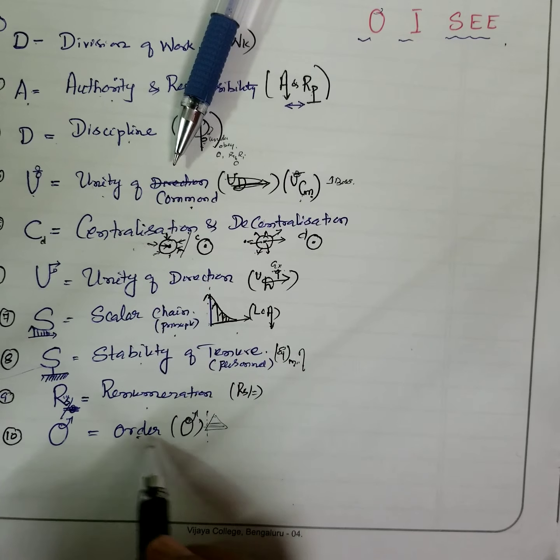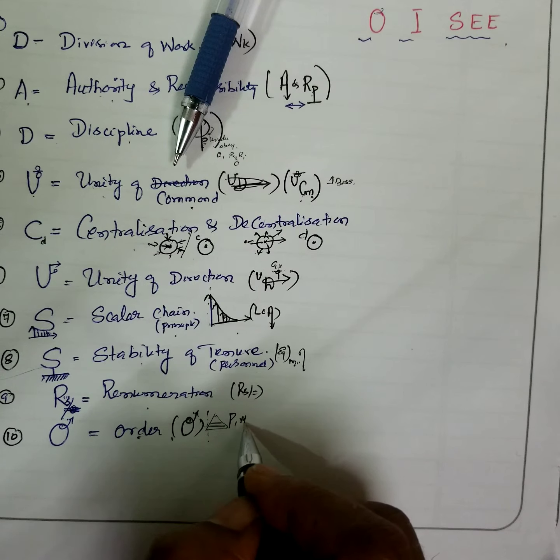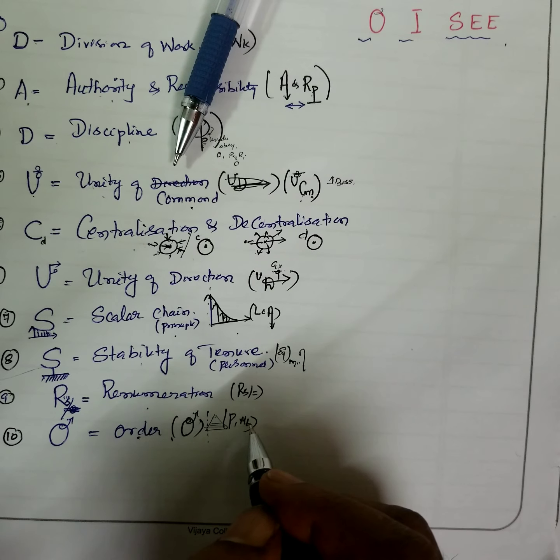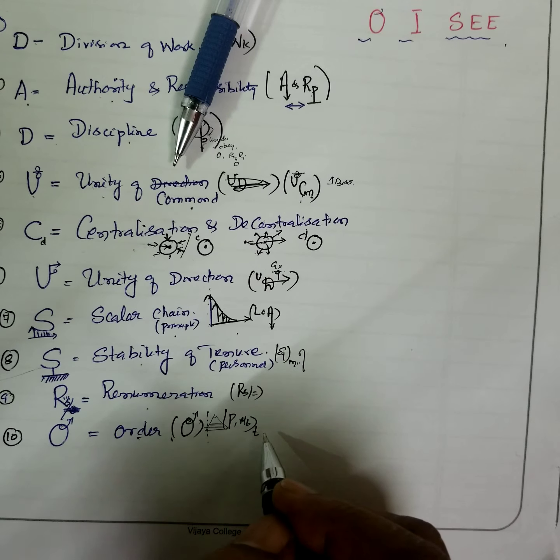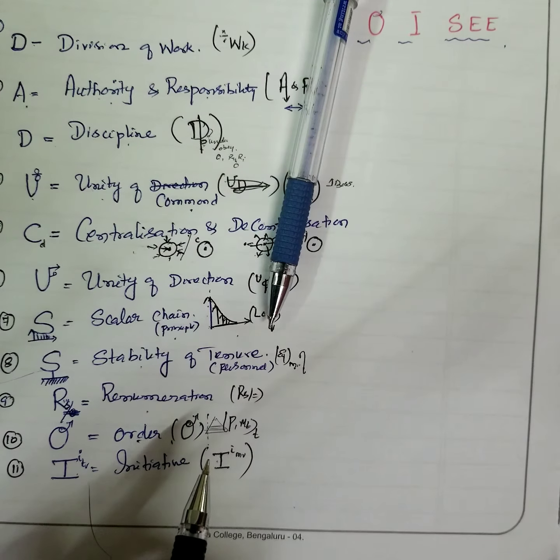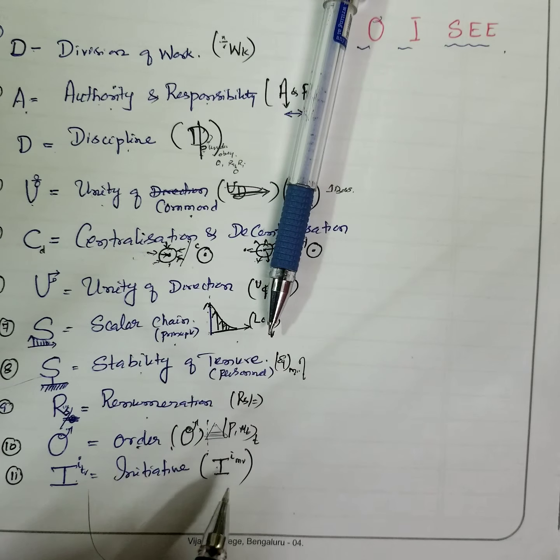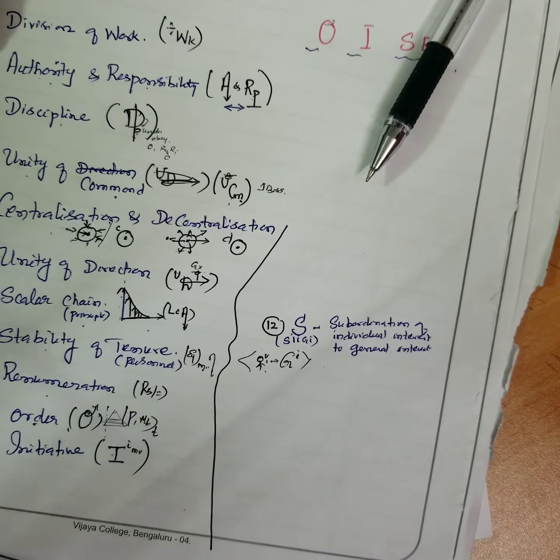What do you mean by order? Order means people and material should be suitably placed at the appropriate time for maximum efficiency. I stands for initiative, that is steps taken by the employees towards their self-motivation.